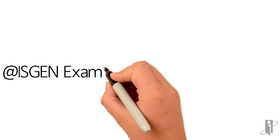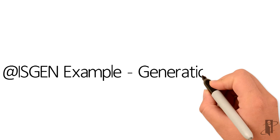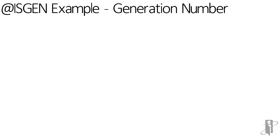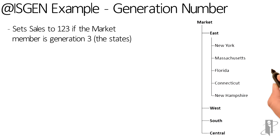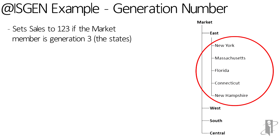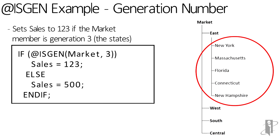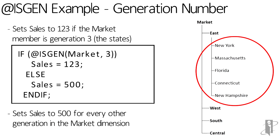Let's take a look at the isGen function when we use a generation number. In our example we want to use generation 3, and if the member comes back as a generation 3 we want the sales to be 123. If not, then we want the sales to come back as 500 for every other generation in the market dimension.